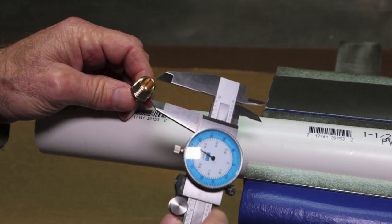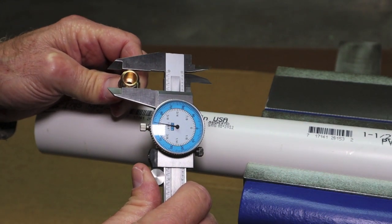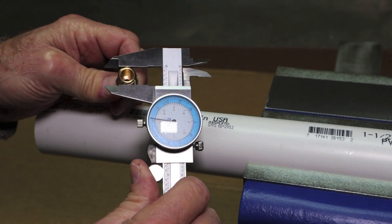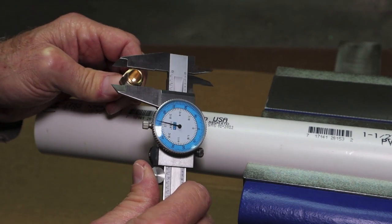The size drill bit we're going to use, if we measure the very beginning of these, they're showing 1 64th to 2 64th, or 1 32nd, over a half inch in diameter.